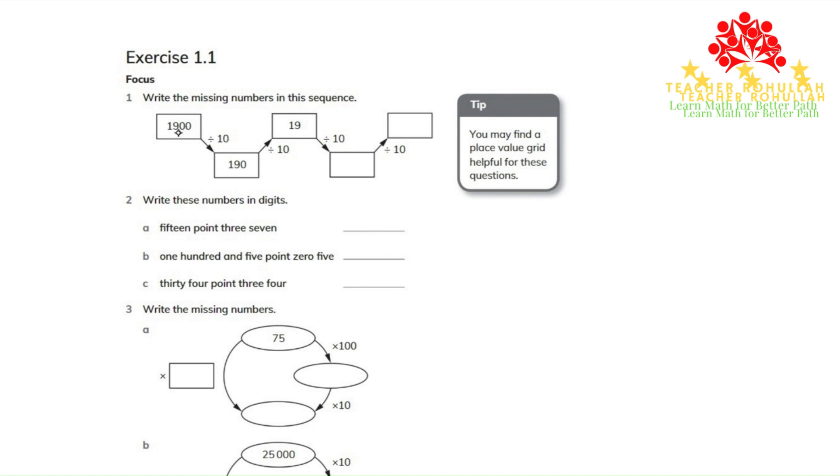So if we divide this by 10, 10 will be reduced from 1900. So the answer is 190. And 190 divided by 10 is equal to 19, which is already solved here.